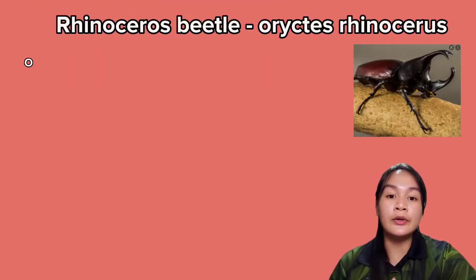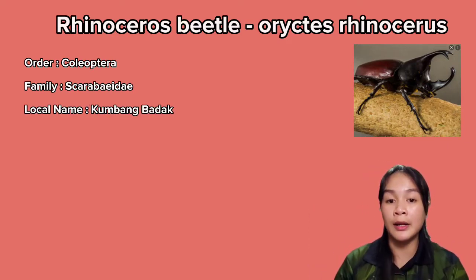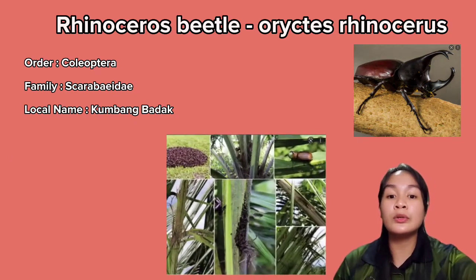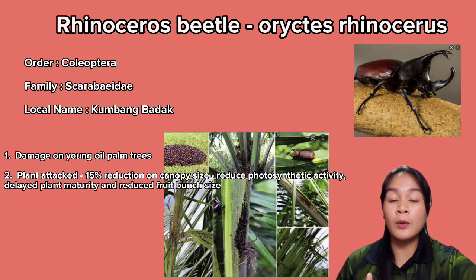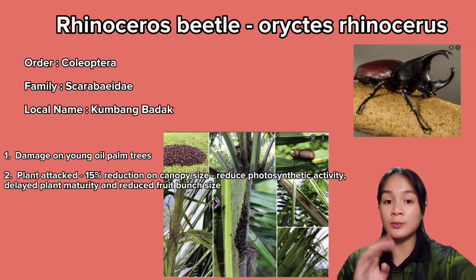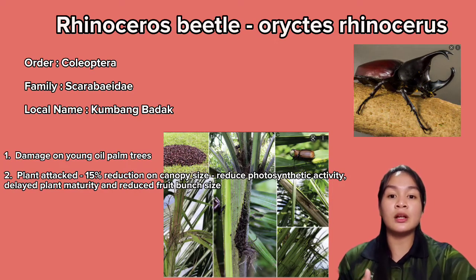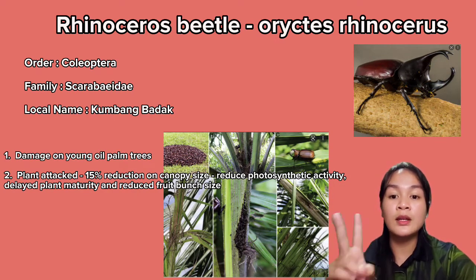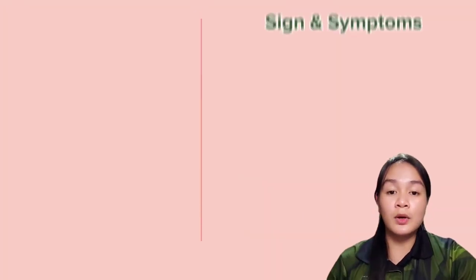The second pest in oil palm is the rhinoceros beetle, under the order Coleoptera and family Scarabaeidae. The local name is kumbang badak. The most important species is Oryctes rhinoceros, as it causes serious damage to young oil palm trees. Crop losses are estimated from 40 to 92 percent when it attacks the plant, and a 15 percent reduction in canopy size will reduce photosynthetic activity, delay plant maturity, and reduce fruit bunch size.